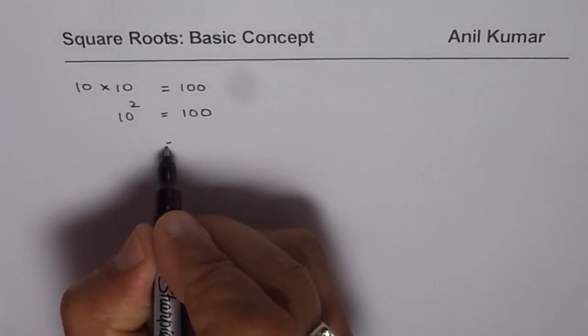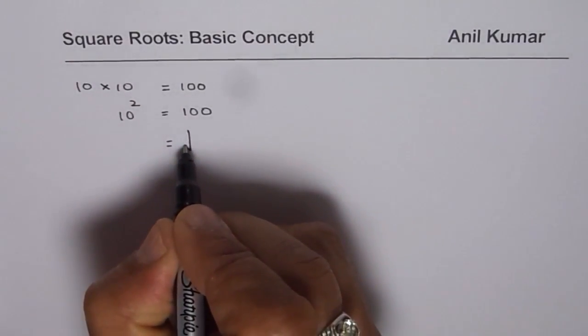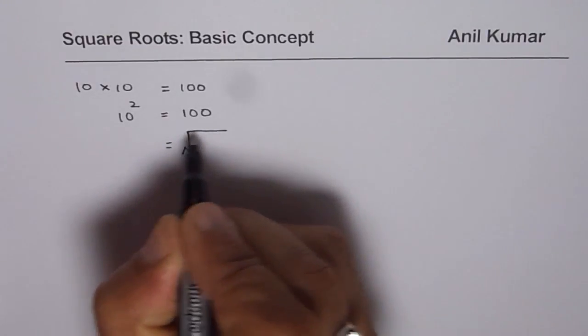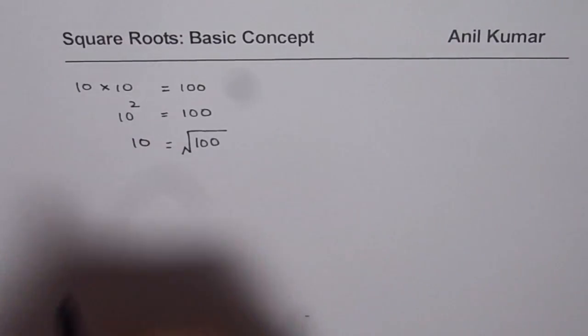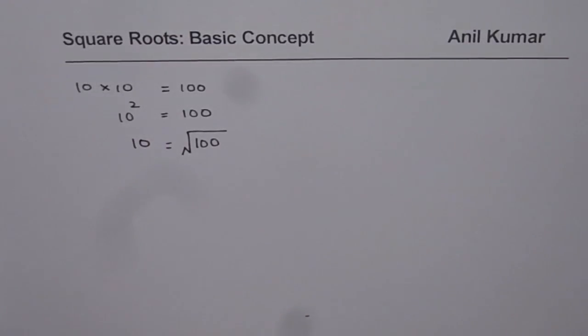So now we are introducing this symbol here. This is the square root symbol. Square root of 100 we say is 10. So that is the basic concept of square root.